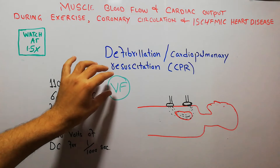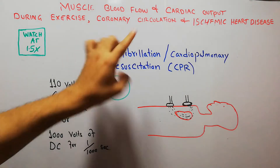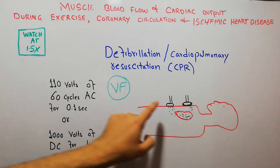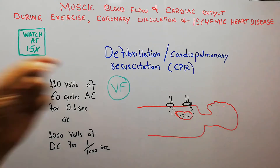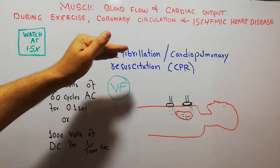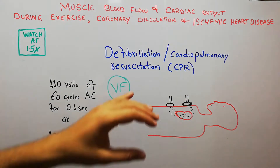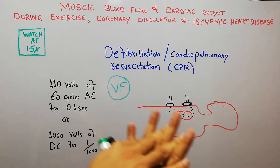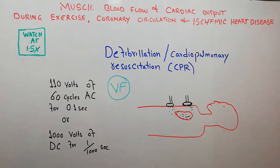To treat ventricular fibrillation, one of the most important treatment options is defibrillation. An electric shock is passed through the heart with the help of electrodes and the rhythm of the heart is restored. Defibrillation can be used alone or combined with hand pumping of the heart, which is then considered cardiopulmonary resuscitation.